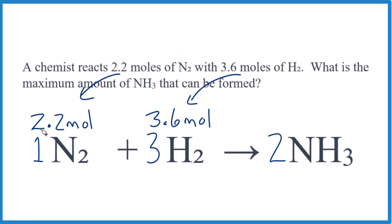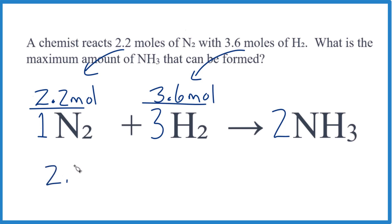To find the limiting reactant, we can just set this ratio up here. So we get 2.2 here, 3.6 divided by 3 is 1.2. So this is our limiting reactant.